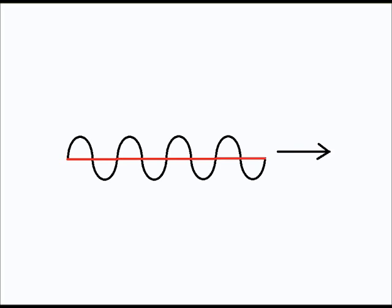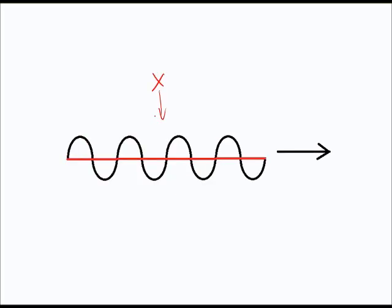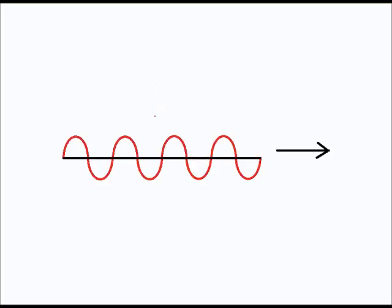If you were to look at this from above — in other words, if you were up at point X and looking down from that dimension — what you would see would be something like this: the horizontally vibrating waves illustrated in red, and the vertically vibrating waves would now appear as a straight line. This is looking at those two wave vibrations from the top.